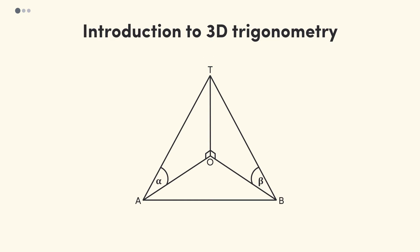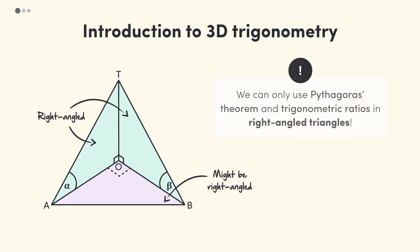So in this diagram there are three triangles. There are two right angle triangles formed by A and B at the top of the tower, and a third triangle created by the base. This third triangle may be right angled, but we can't assume it is unless it's explicitly marked or stated in the question. This is important to know because we can only use Pythagoras' theorem and Trigonometric ratios in right angle triangles.